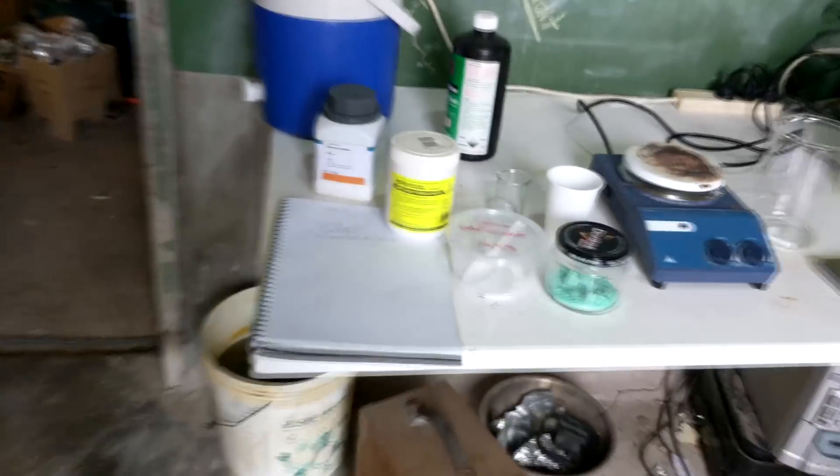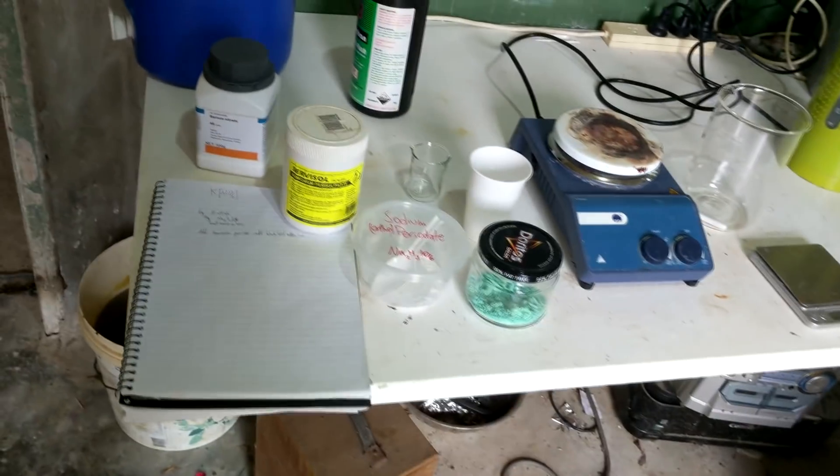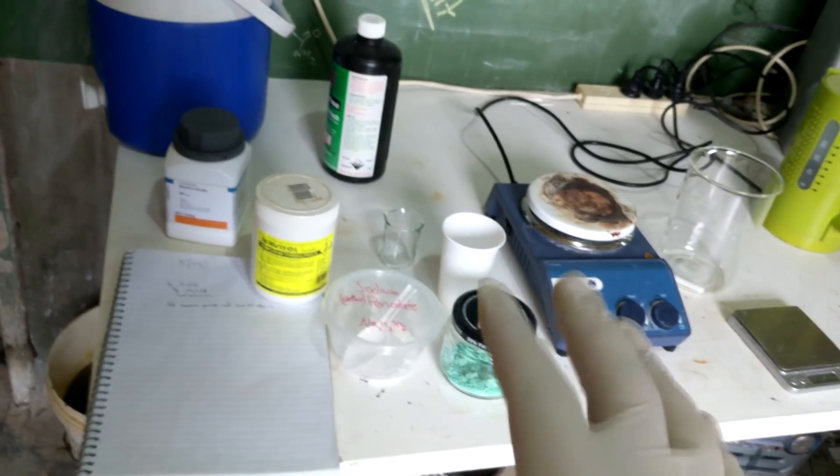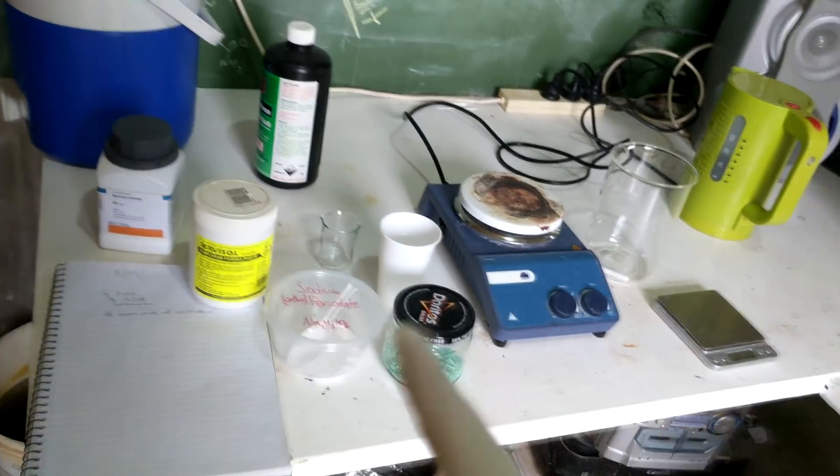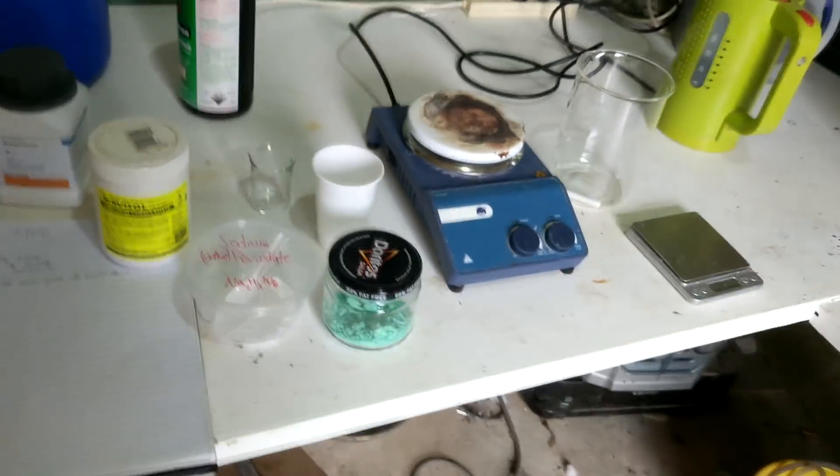Hello, welcome back. So in this video we're going to be using three chemicals to make a very obscure oxidizer called potassium nickel periodate. No, sodium potassium. I don't know why I've written potassium nickel periodate. We're not using potassium. Sodium nickel periodate.